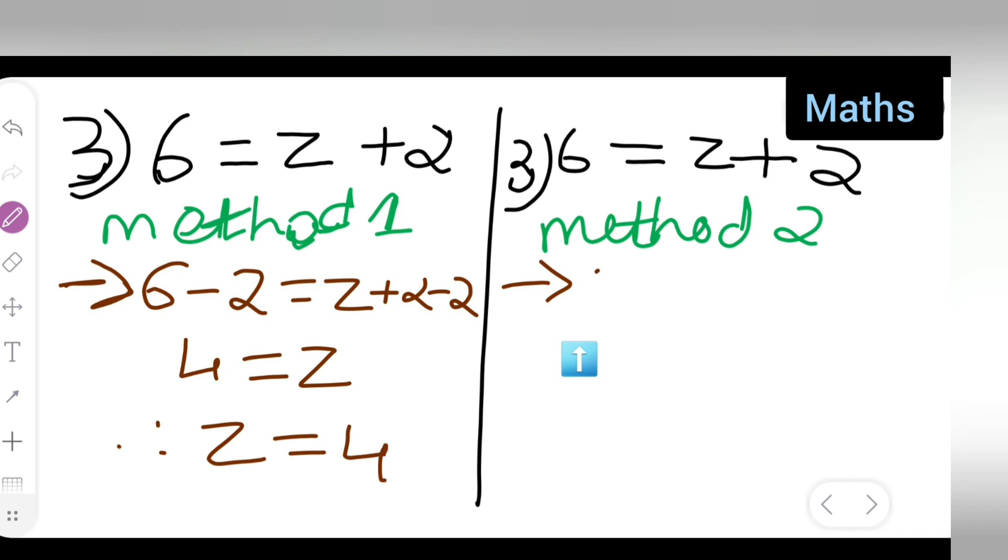Here you all can do like this. 6 is equal to Z plus 2. So, Z is equal to 6. Right. It has it is. This 2 you will take it other side. So, it will be 6 minus 2. So, Z is equal to 6 minus 2 is nothing but 4. So, both the methods I have given it to you all. I feel this method will be more easier towards you all. The method 2.